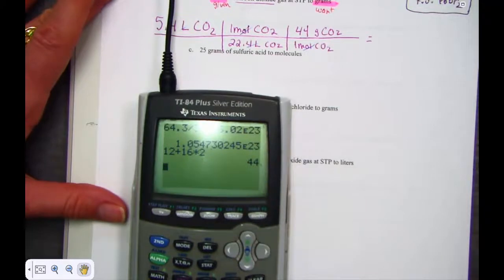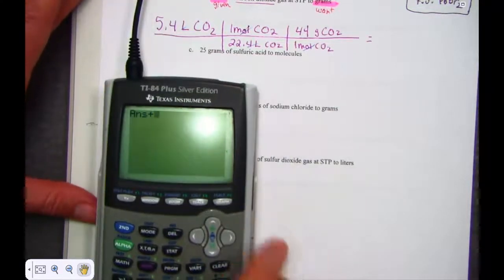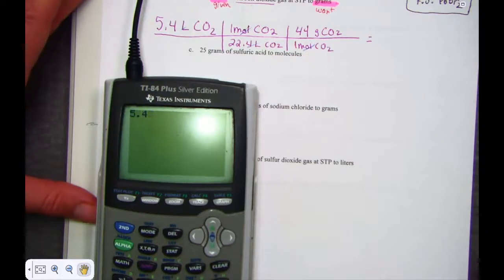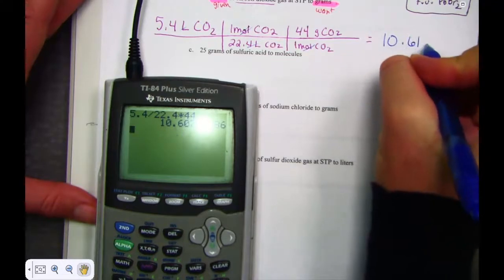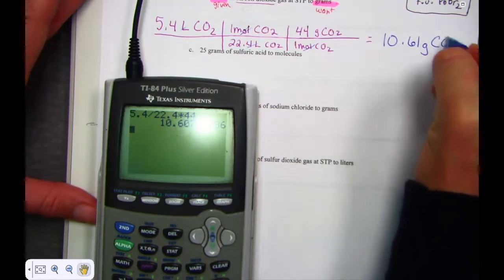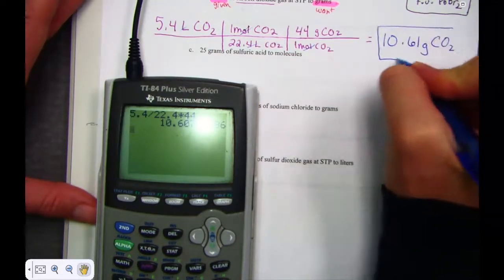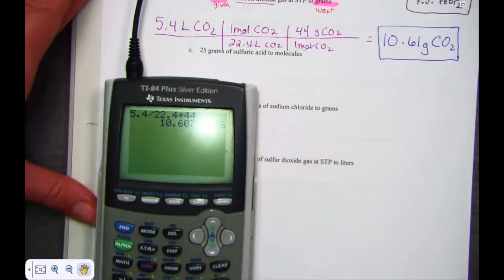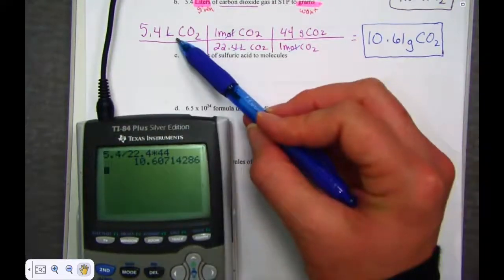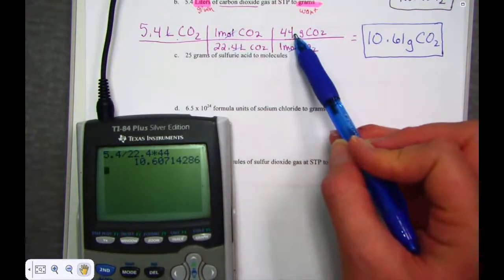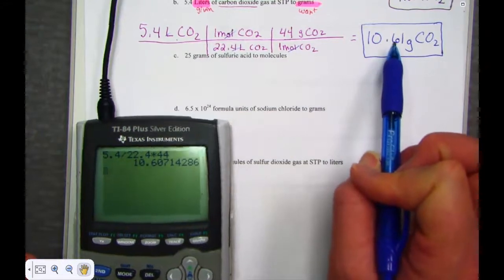Step one canceled liters; step two cancels moles, and we've arrived at the mass of carbon dioxide. Hit with me: 5.4 divided by the molar volume 22.4, times 44. The answer is 10.61 grams of carbon dioxide. Number, unit, label — and an A-plus answer. Liters divided by molar volume, multiplied by molar mass — we've changed volume into grams.